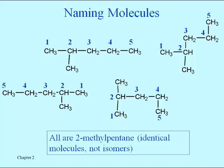The point of this slide is that we don't have to draw the parent chain from left to right or number it that way — it can zigzag up and down the page. All of these representations can be numbered to identify the exact same molecule: 2-methylpentane. It takes a little trial and error sometimes to know which carbon should be number one, since we have to start at one end or the other, and it's not always the end we might guess first. But with practice we can quickly find the numbering that lets us use the number two to identify the location of that methyl group.